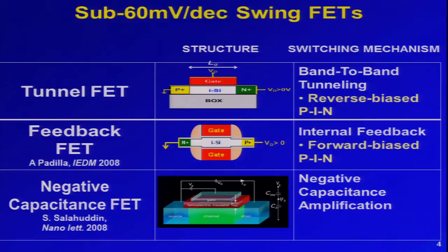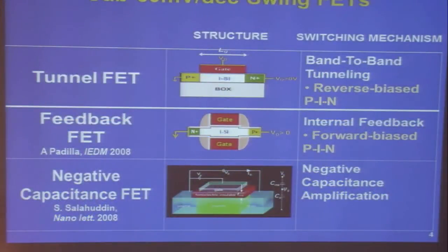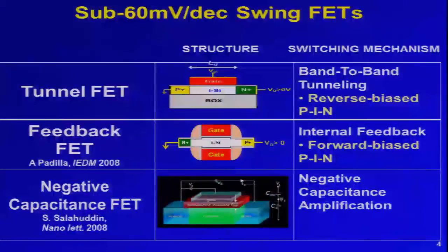There are several solutions being investigated to break the 60mV-per-decade barrier. One of them is the TFET, as the previous talk just mentioned. Another one is the feedback FET that uses some internal feedback to make the device turn on suddenly. Today I'm going to focus on the negative capacitance FET, proposed by Professor Salahuddin in 2008, whose structure is similar to a MOSFET except the gate dielectric is replaced with a negative capacitance element — in this case, a ferroelectric. The negative capacitance can amplify the gate voltage to make the swing smaller.